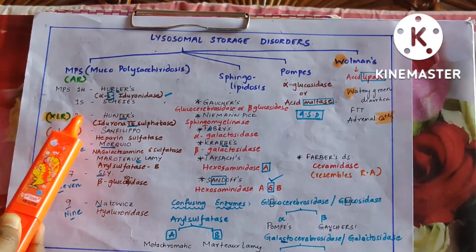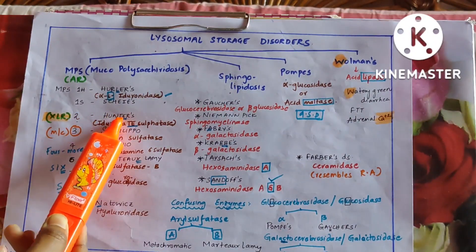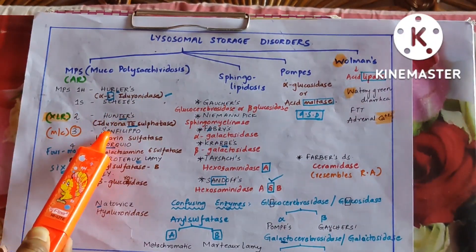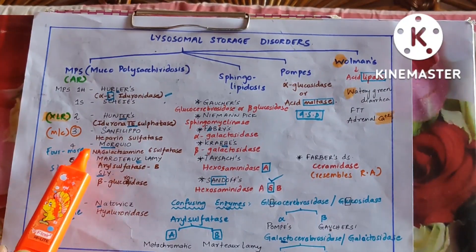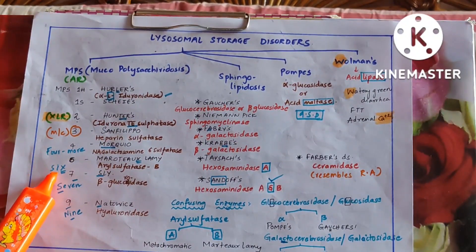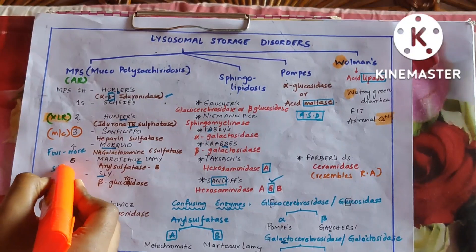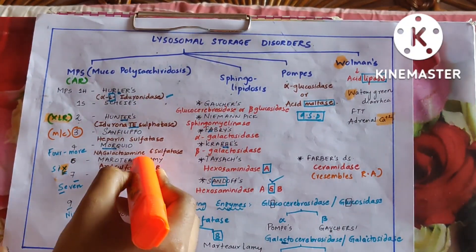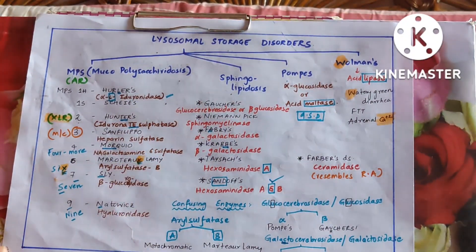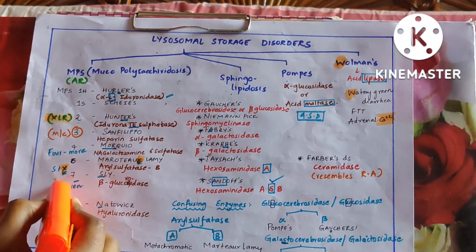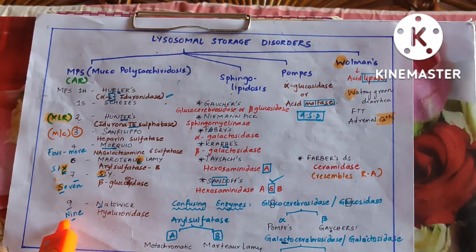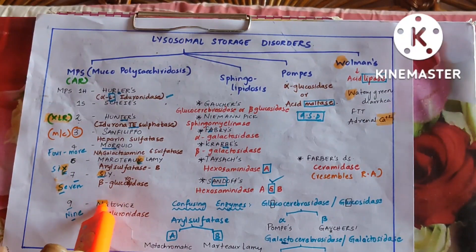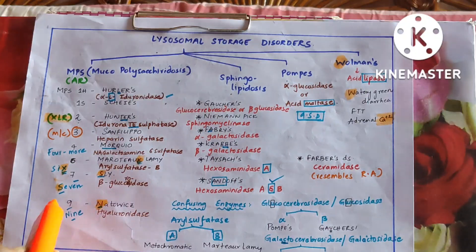One H is Hurler's, one S is Scheie's, two is T for Hunter's, third one is Sanfilippo which is the most common, four is Morquio — Morquio is more Q — and six has X in it so Moroteaux-Lamy has X in it. There is no five in MPS. Seven: S for Sly. Nine: N for Natowicz. X is Moroteaux-Lamy, S is Sly (seven), and N is Natowicz (nine).